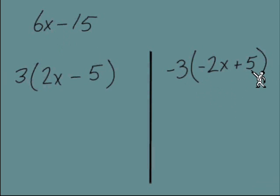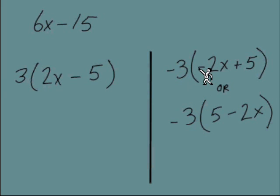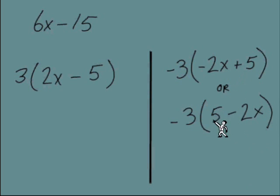And negative 3 times positive 5 gives us negative 15. One more thing to see here is that we can rearrange terms. We can rearrange terms as long as every sign — pluses and minuses — is thought of as being attached to the term directly behind it. So negative 2x stays negative 2x when rearranged, and positive 5 stays positive 5. Going from one line to the next was just rearranging terms, moving them around.